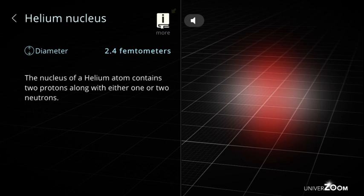Helium nucleus diameter: 2.4 femtometers. The nucleus of a helium atom contains two protons along with either one or two neutrons.